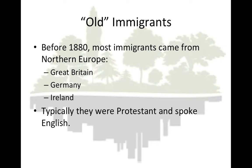Shifting patterns of immigration: before 1880, most immigrants who came to America came from parts of Northern Europe, especially Great Britain, Ireland, and Germany. In general, these immigrants were Protestants. Except for large numbers of Irish Catholics, most of these early immigrants also spoke English.